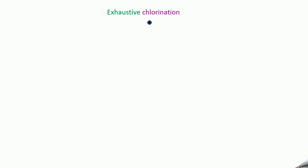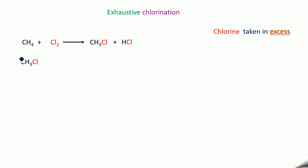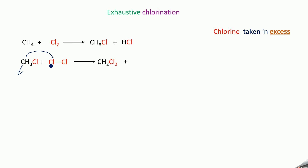Exhaustive chlorination: take methane on treatment with chlorine. Hydrogen is removed and substituted with chlorine, giving CH3Cl — methyl chloride — and hydrogen chloride. Since chlorine is taken in excess, this methyl chloride is treated with excess chlorine. There is a removal of hydrogen from this carbon and that hydrogen is substituted with chlorine, giving CH2Cl2. CH3 becomes CH2, and one chlorine gets substituted, with hydrogen combining with chlorine to form HCl.